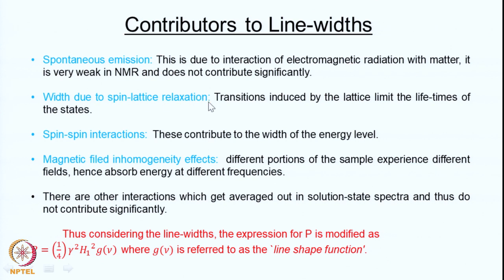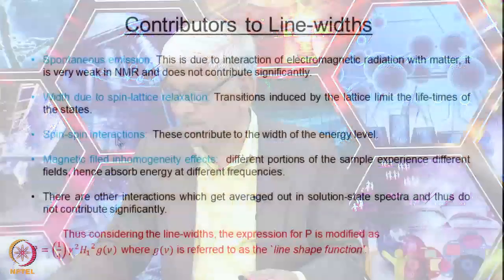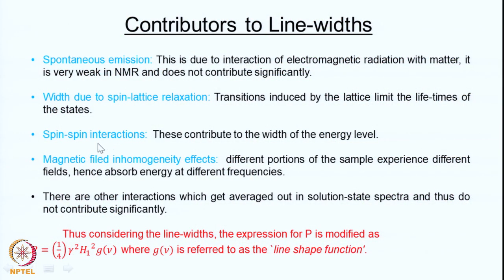The second factor is width due to spin-lattice relaxation. Spin-lattice relaxation allows the spins to come back to equilibrium whenever there is a perturbation. There are interactions between the lattice spins and the spin system of interest; because of these, energies are fluctuating, which limits the lifetime of the state and contributes to line width. Similarly, spin-spin interactions within the spin system cause fluctuations in energy values, causing transitions between states, also resulting in line width.